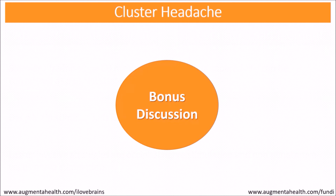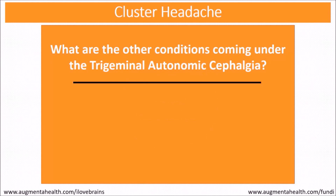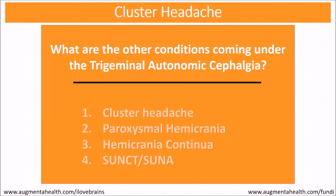Moving to a bonus discussion: what are the other conditions under trigeminal autonomic cephalgia? Besides cluster headache, the other conditions are paroxysmal hemicrania, hemicrania continua, SUNCT, and SUNA.